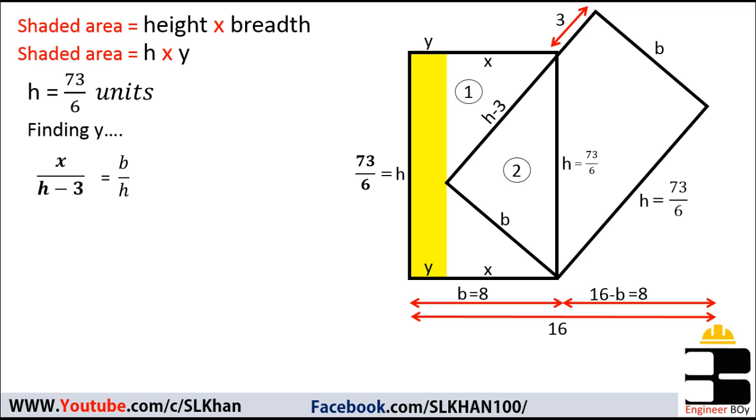From here we can calculate x, and then we will subtract x from the breadth of that rectangle to get y, the breadth of that shaded area. So x/(h - 3), where h is 73/6, equals b/h, where b is 8 and h is again 73/6.